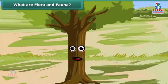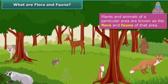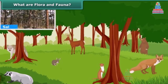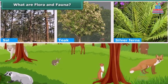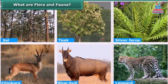Students, you must have observed that some animals and plants typically belong to a particular area. Plants and animals of a particular area are known as the flora and fauna of that area. For example, Sal, tea, and silver ferns are the flora, and chicanara, blue bull, leopard etc. are the fauna of the Pachmarhi Biosphere Reserve.